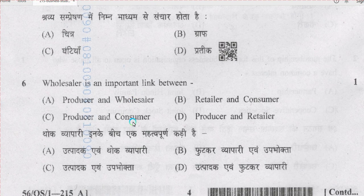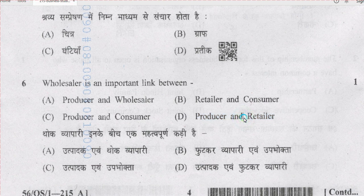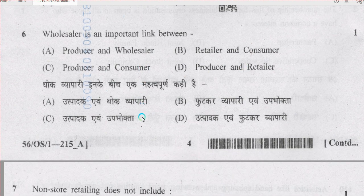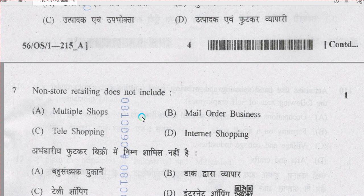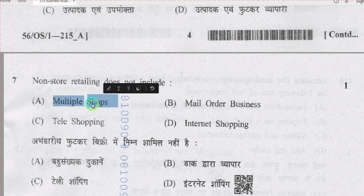Question number 6: wholesaler is an important link between D, producer and retailer, because we have studied in chapter number 13, channels of distribution, that wholesaler is a link between producer and retailer. Question number 7: non-store retailing does not include option A, multiple shops, because in non-store retailing we do not have any kind of shop.